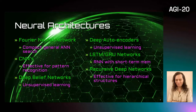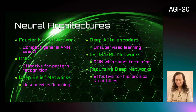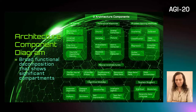We are going to provide a large set of common deep learning models, including Fourier neural networks for compact neural net search, convolutional neural nets which are the common building block of many deep models, deep leaf networks and deep autoencoders for unsupervised learning, LSTM and GRU for recurrent neural nets with built-in memory, and recursive deep networks to represent hierarchical structures. The CSM will be able to reproduce and vary over these basic models.